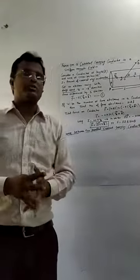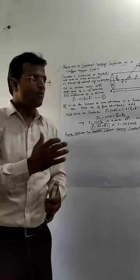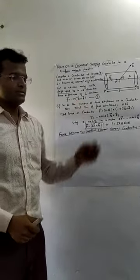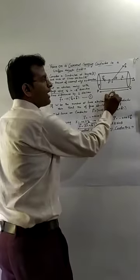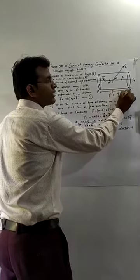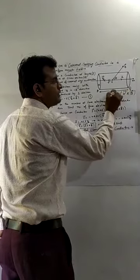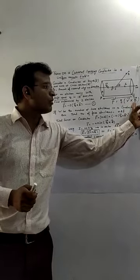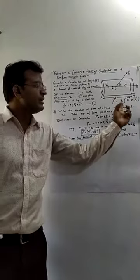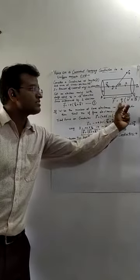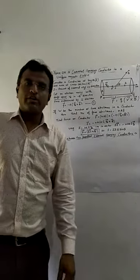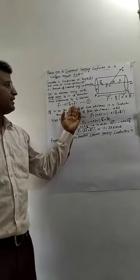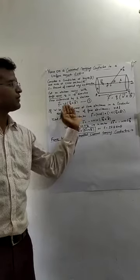What is the force experienced by a single electron? The force acting on a charge particle placed in a magnetic field — from the previous topic — is F = Q(V × B). For an electron, the charge is minus e and the velocity is Vd (drift speed), and B is the magnetic field. This is equation number 1.